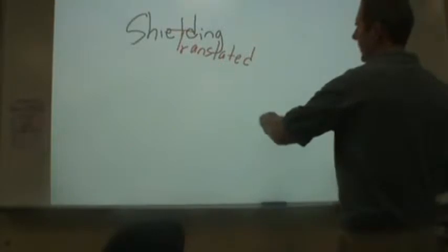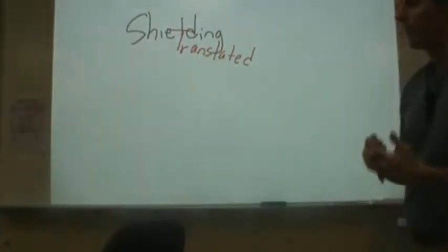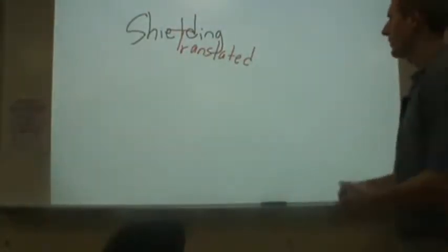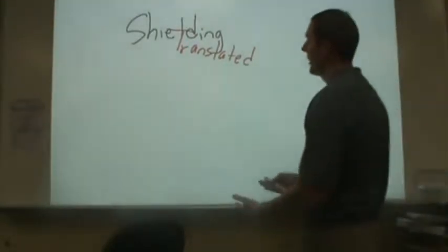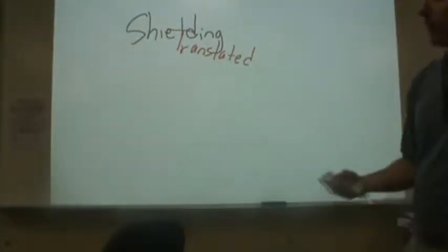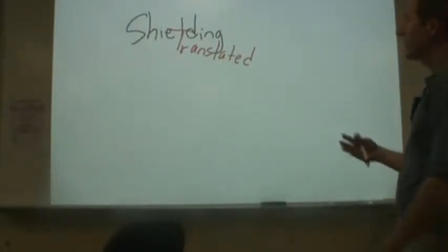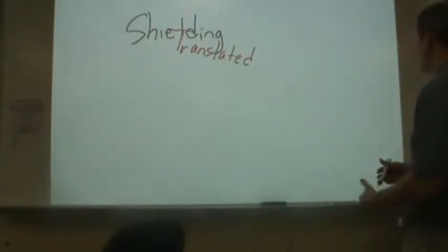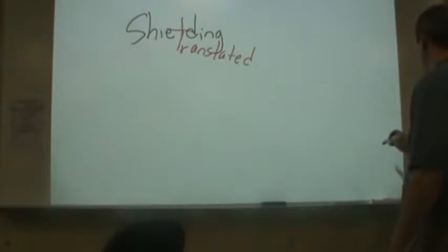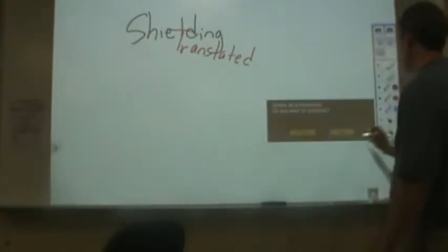Here I want to go through shielding, which is specific to when we're looking at periodic trends — atomic radii, ionic radii, ionization energies, electron affinities, and electronegativities. Shielding gets brought up, and I want to translate that and go through a couple of things that are not particularly great about it and try to fix some of those.